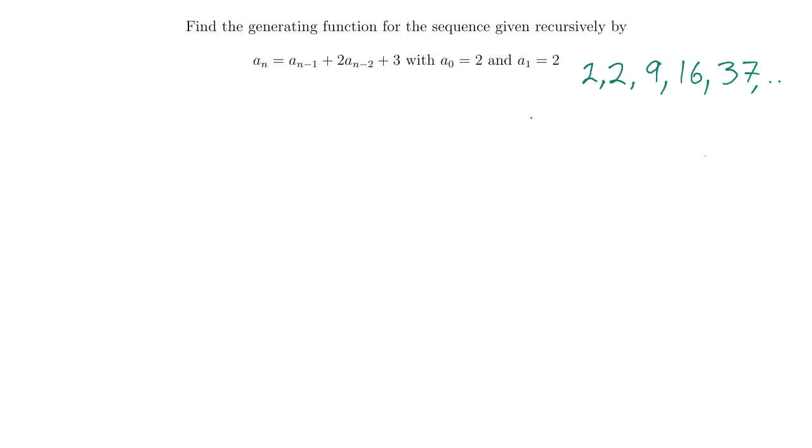Alright. It also might be a good idea to rewrite the recurrence relation like we did last time. Let's get all the a-something terms on one side. That will give me a_n minus a_{n-1} minus 2a_{n-2}. I'm going to say that's equal to 3 instead of equal to 0. So that's where this is different.